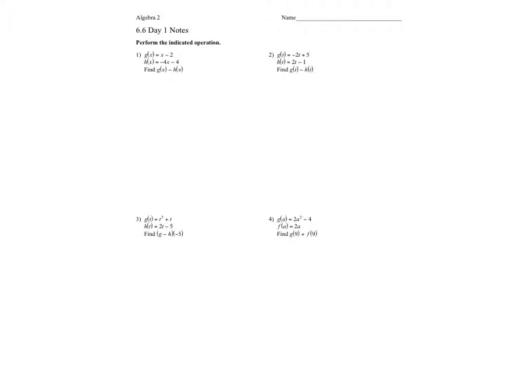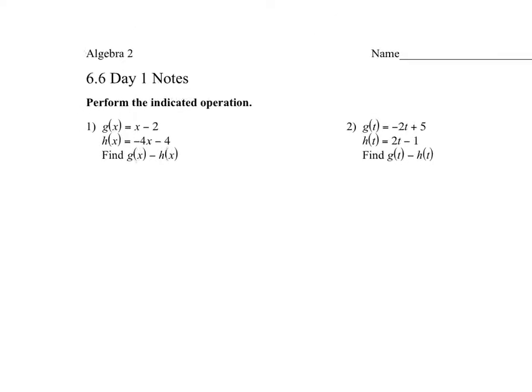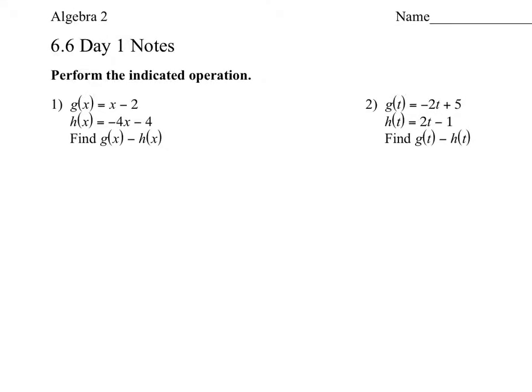So let's look at the first couple of examples here. It says, in the directions, perform the indicated operation. So in problem number one, we have g of x is x minus 2, and h of x is negative 4x minus 4. And we want to find g of x minus h of x. So I want to take g of x, I'm going to plug that in, g of x is x minus 2, and then we're going to subtract h of x, which is negative 4x and minus 4.